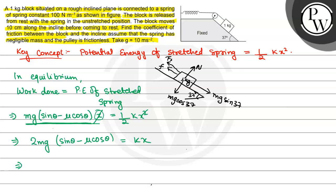Putting the values of theta, M and g, we have 2 times 1 times 10 times sin 37, that is 3 by 5, minus mu times cos 37.